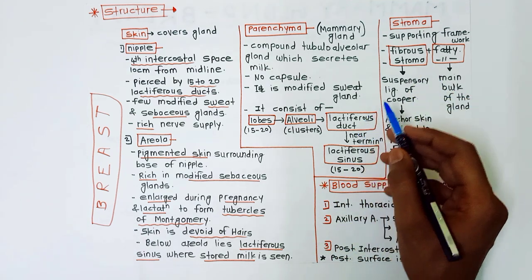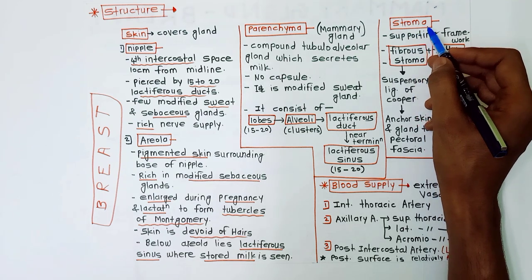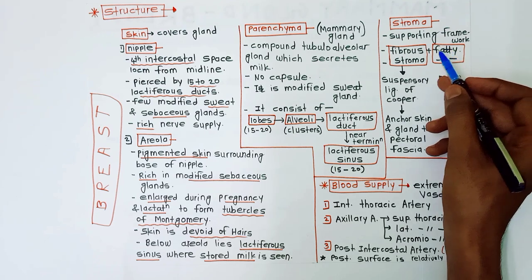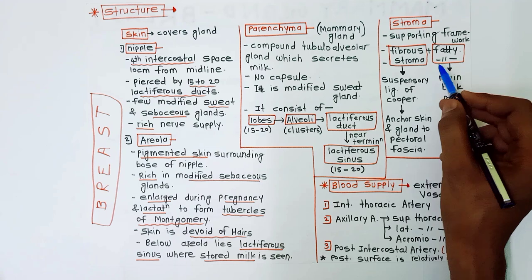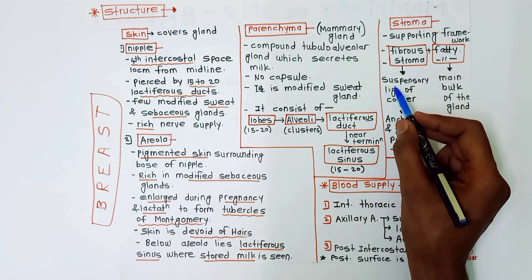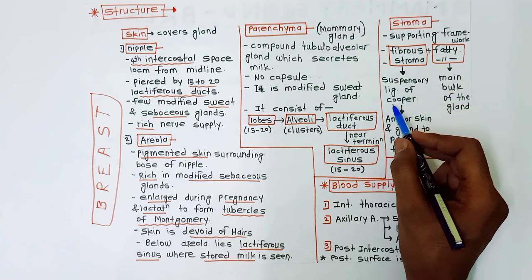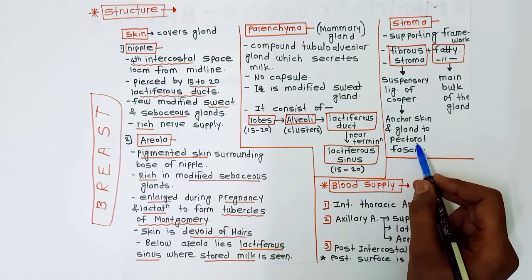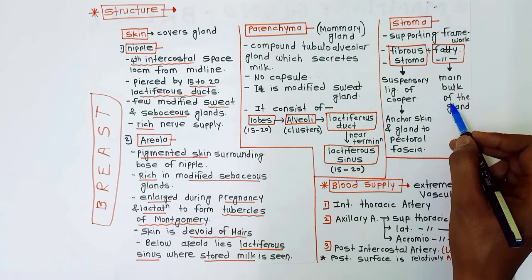After this we have the stroma, which is the supporting framework of the breast. It has two parts: fibrous stroma and fatty stroma. The fibrous stroma forms a structure called the suspensory ligament of Cooper, which anchors the skin and gland to the pectoral fascia. The fatty stroma forms the main bulk of the gland.